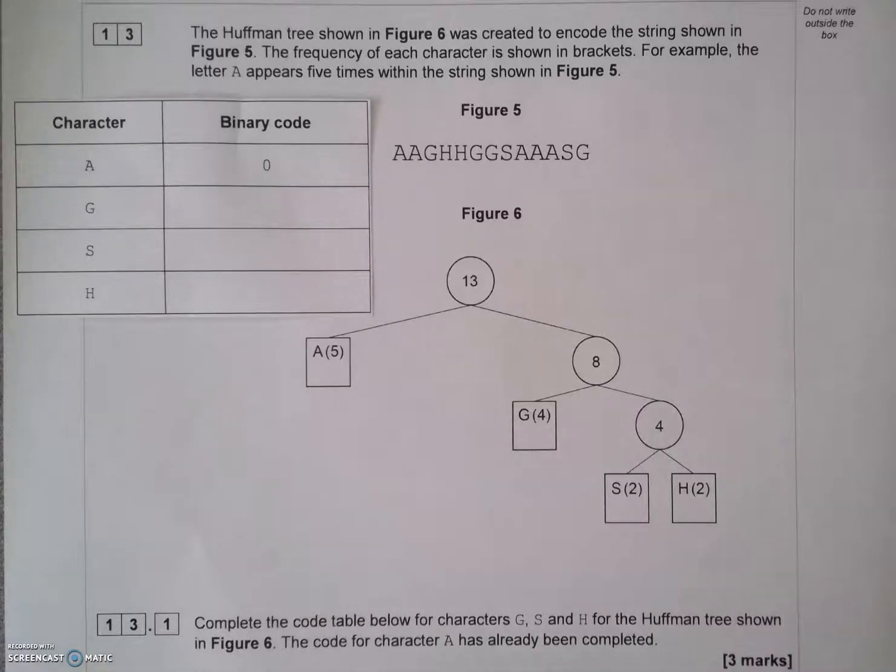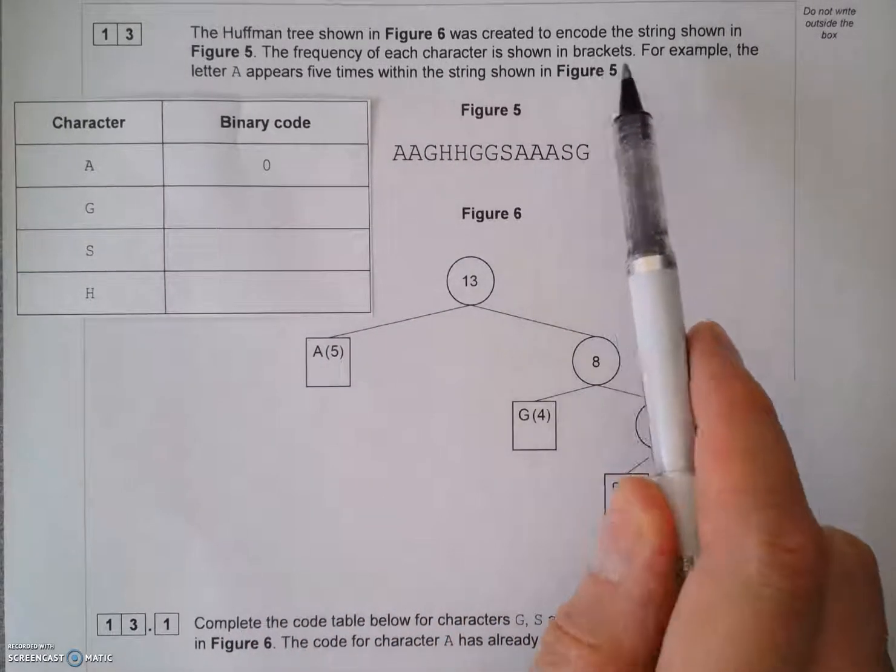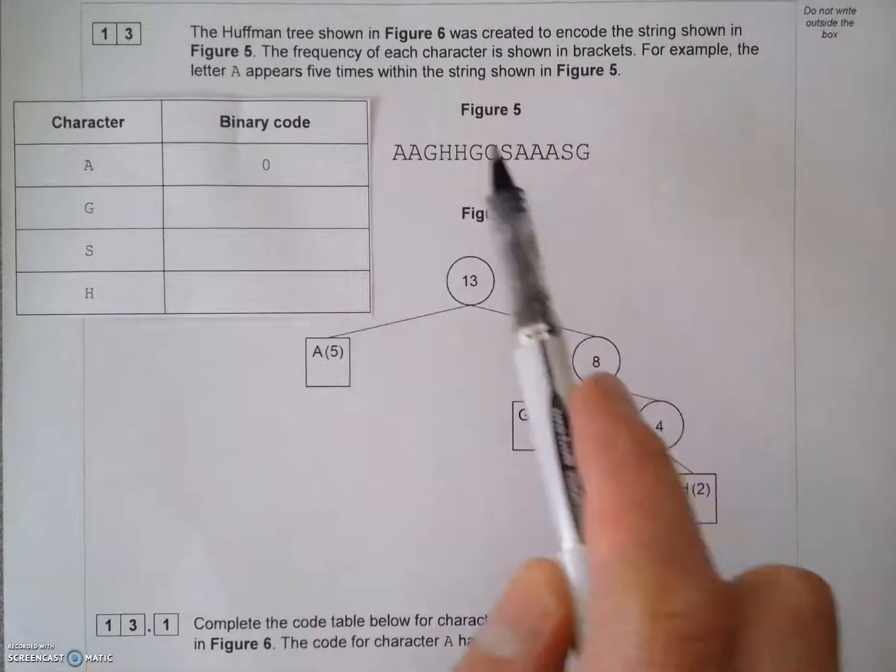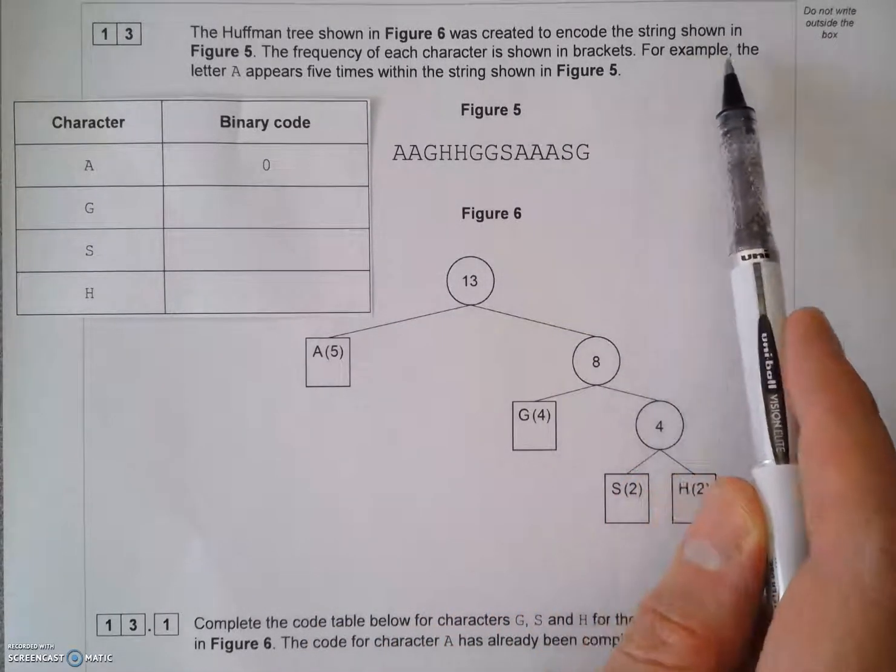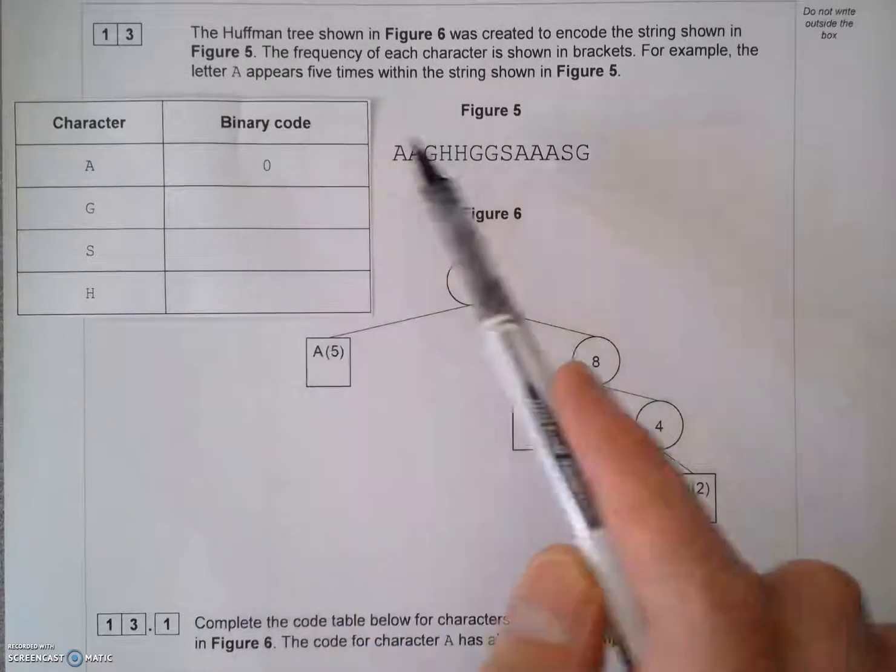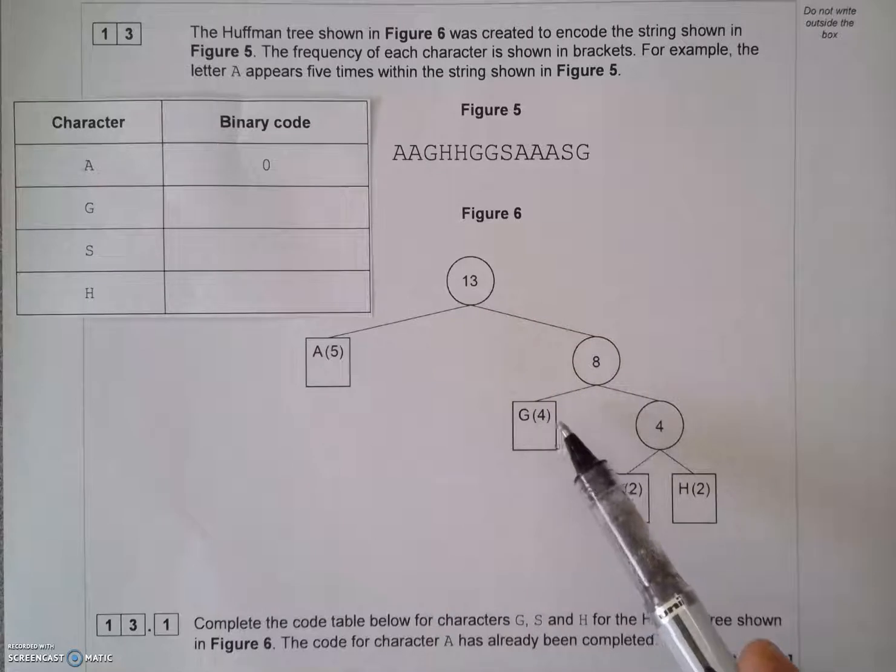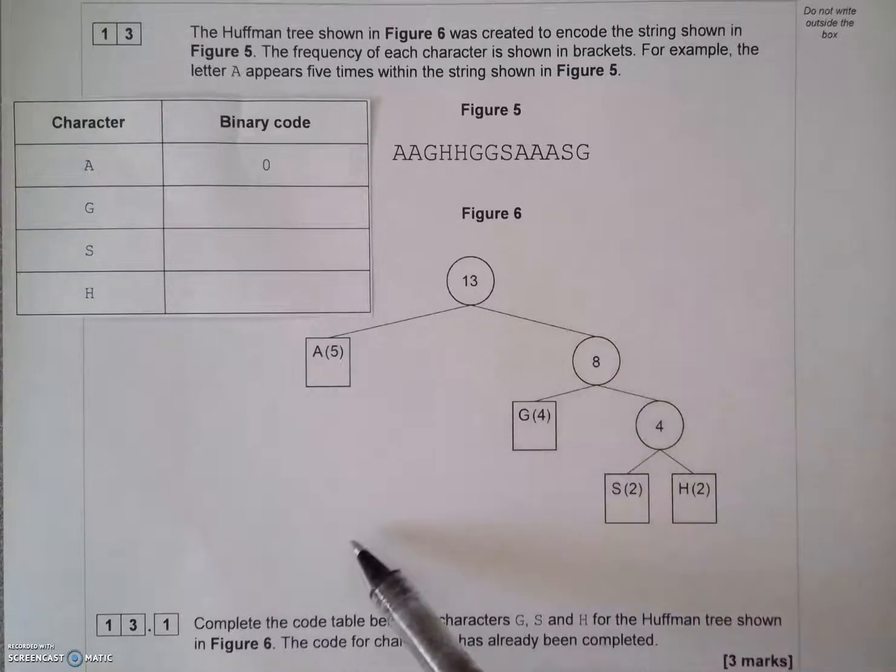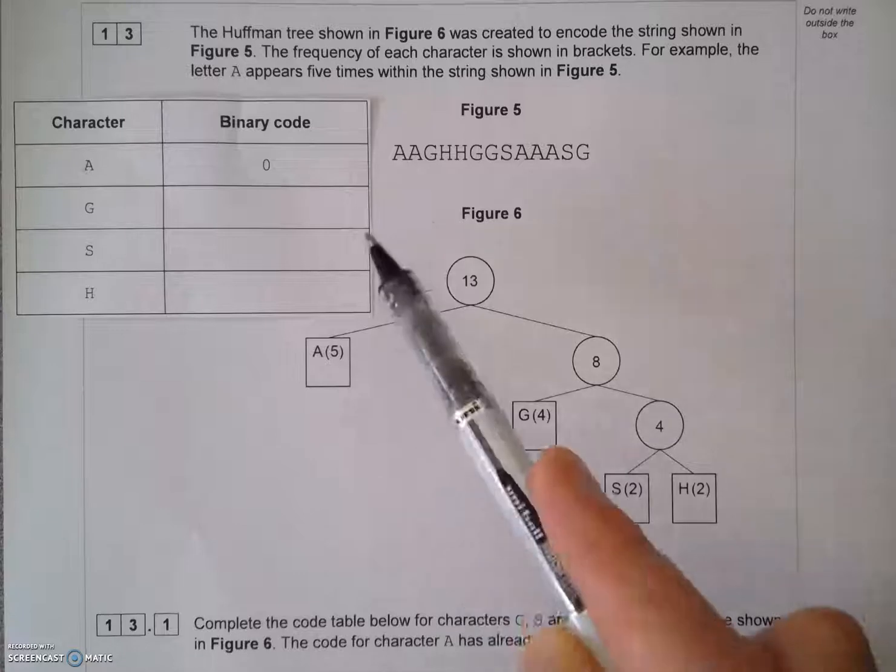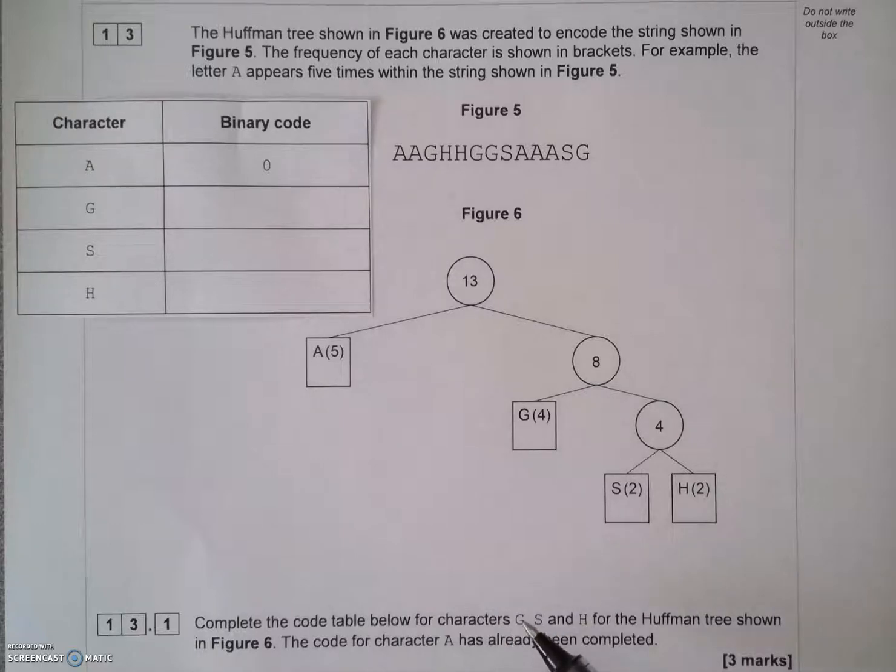Now, this one's worth three marks, and the question says, A Huffman tree shown in figure 6 was created to encode the string shown in figure 5. That's the string there. The frequency of each character is shown in the brackets. For example, the letter A appears five times within the string shown in figure 5. So in the brackets there, that says that A appears five times, G appears four times, etc. Complete the code table below. So, I've placed it up here, just to cut it out and put it up here, because it's easier for doing this. For characters G, S, and H. The Huffman tree shown in figure 6. Code for character A has already been completed.